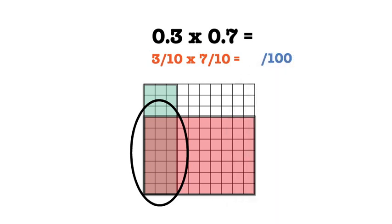To determine our numerator, we will need to look at how many squares are in the double-shaded area. For this problem, we have 21 squares that are double-shaded, making our numerator 21. Now we know that our answer is 21 over 100.